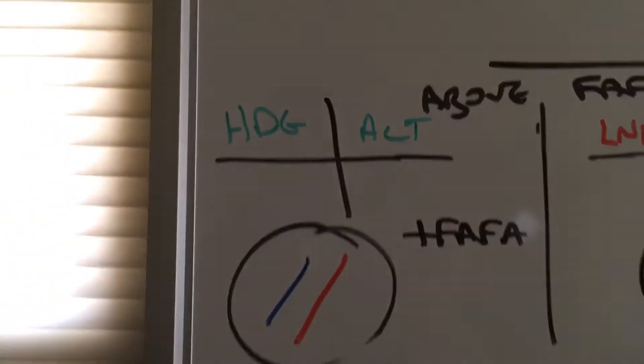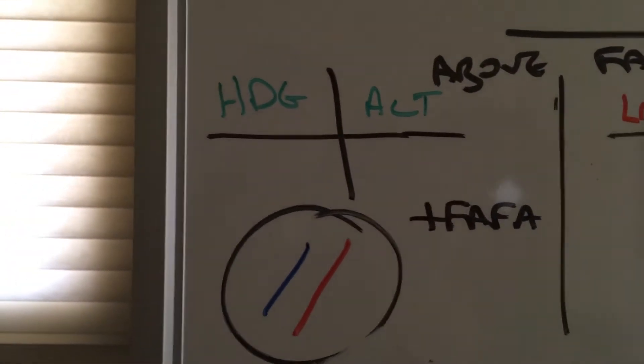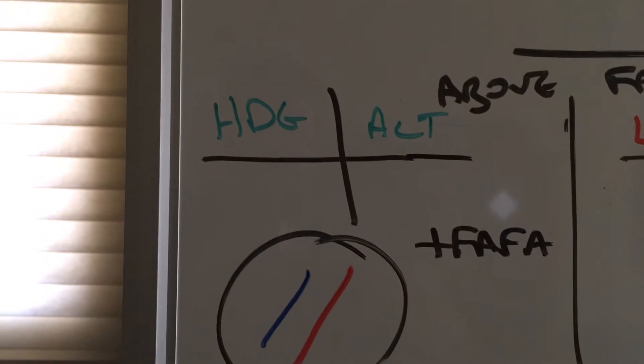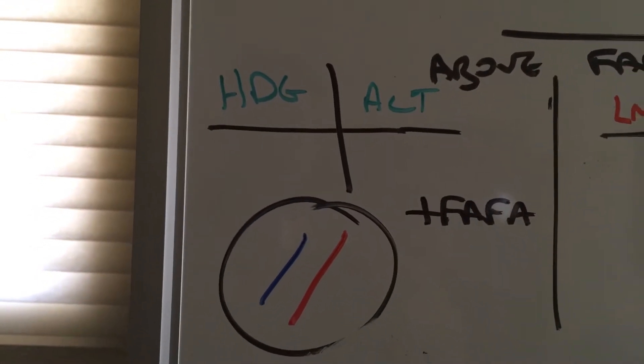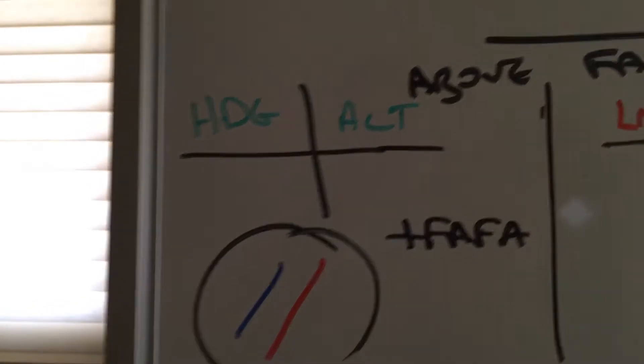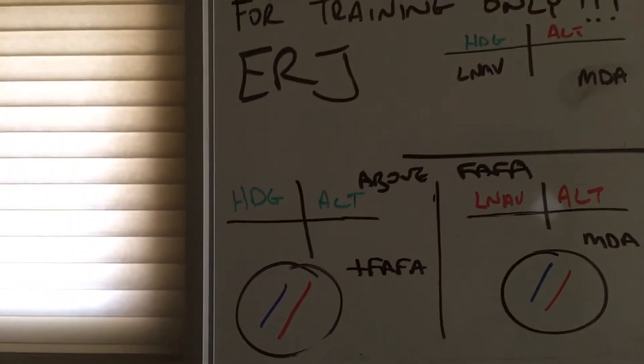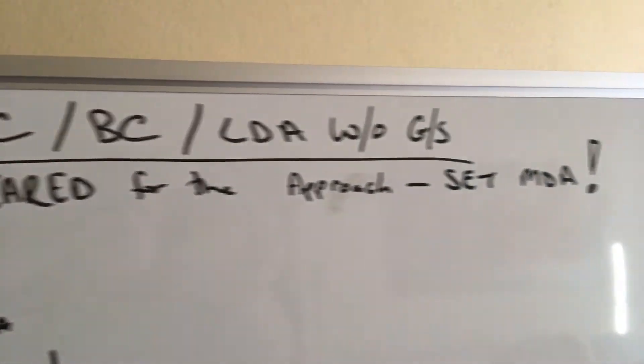Let's assume we're above the final approach fixed altitude and we've been getting headings and altitudes from ATC, so we're conventional heading altitude above screen. Preview is available, we select a preview. Next, we're on a 30 degree intercept and ATC says cleared for the approach.